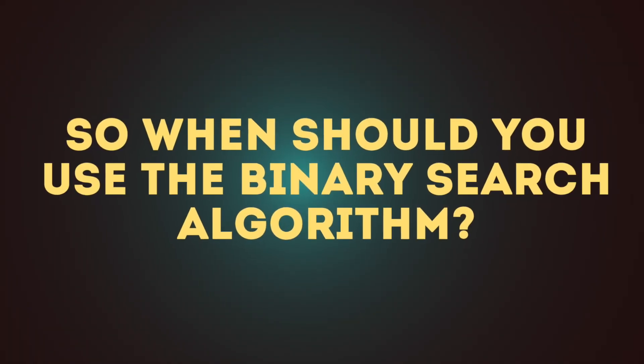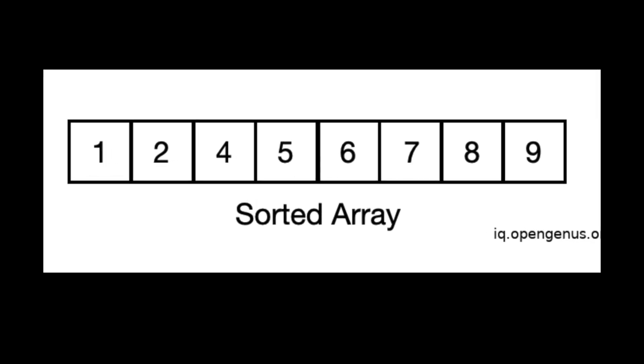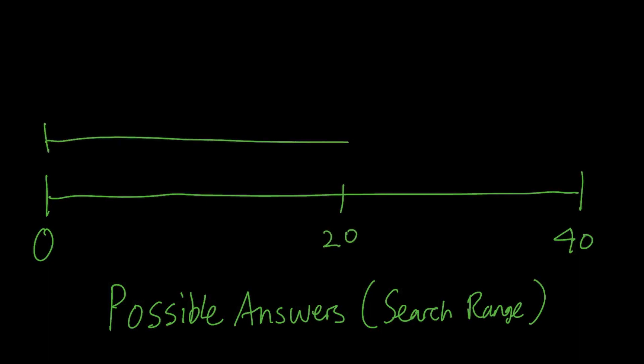So when should you use the binary search algorithm? The most common example is to use it with a sorted array, but actually it can be used whenever you have to make a decision to shrink the search range. We'll go over some problems to show that binary search isn't only on a sorted array.